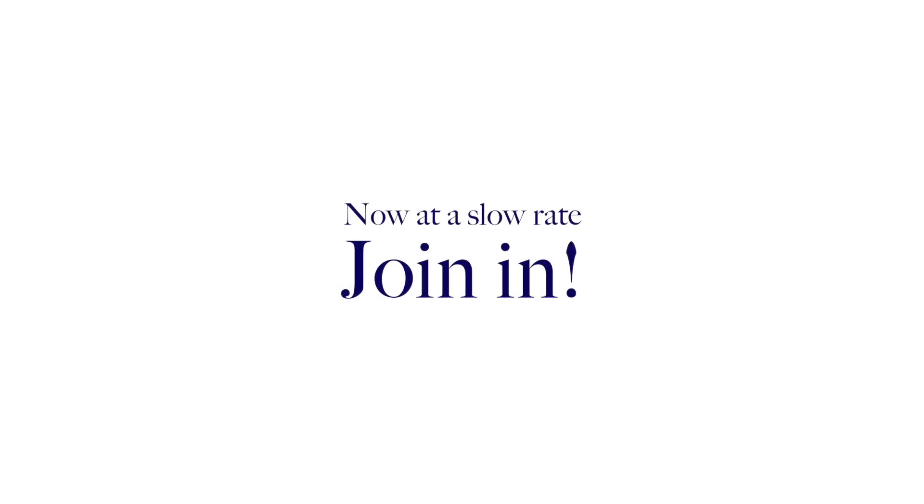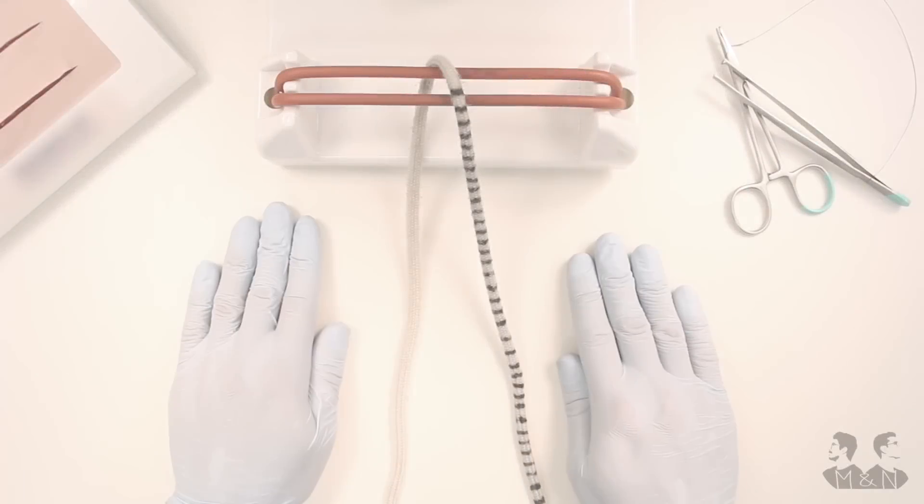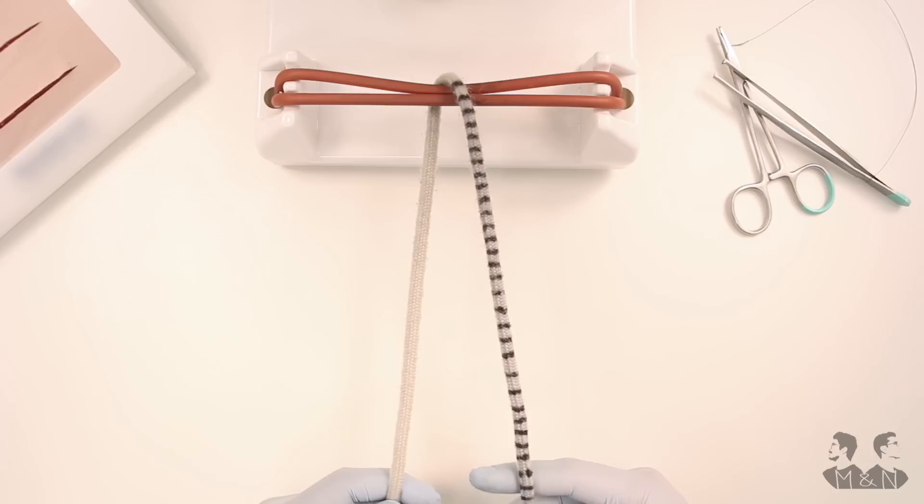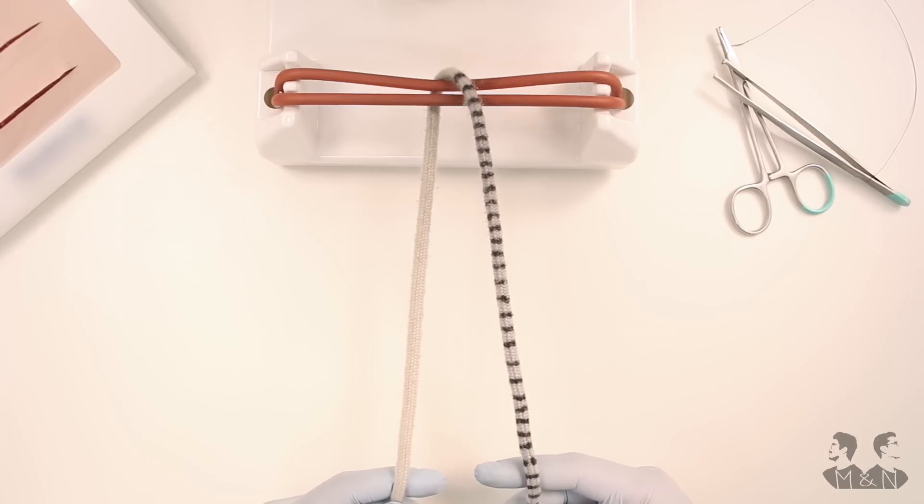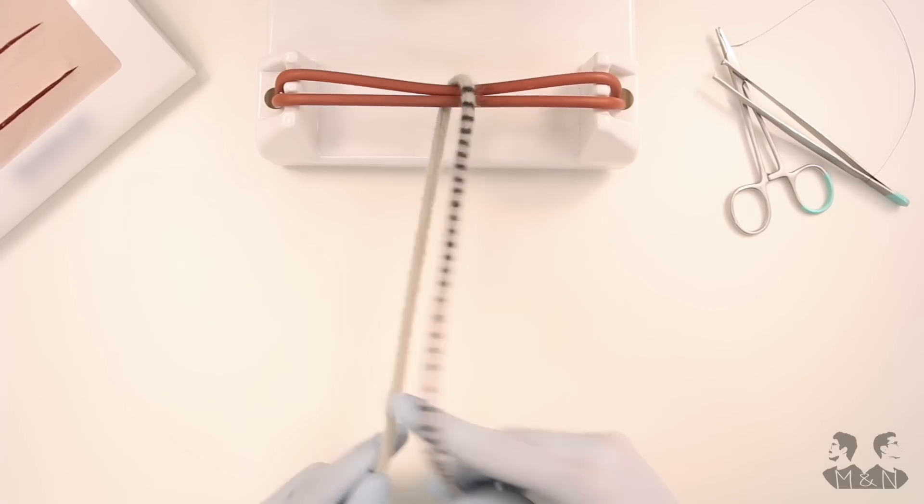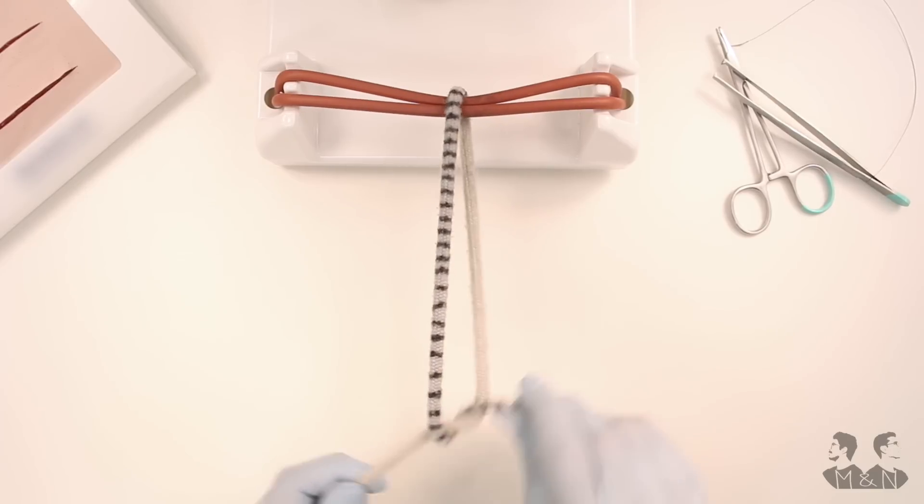And one more time we will explain and you join in. Slipknot is tied by a sequence of two middle finger or two index finger knots. At the beginning it is important to tie them loose. In this video we demonstrated it on the basis of two index finger tied knots with the right hand.